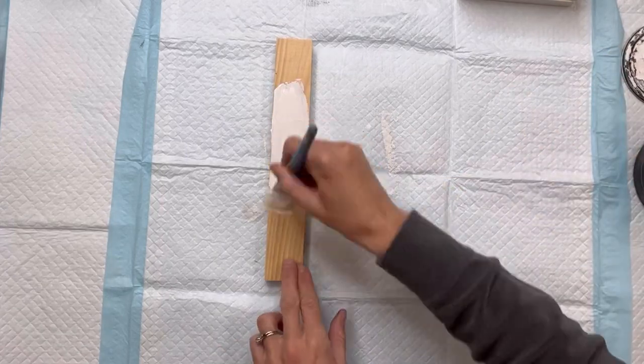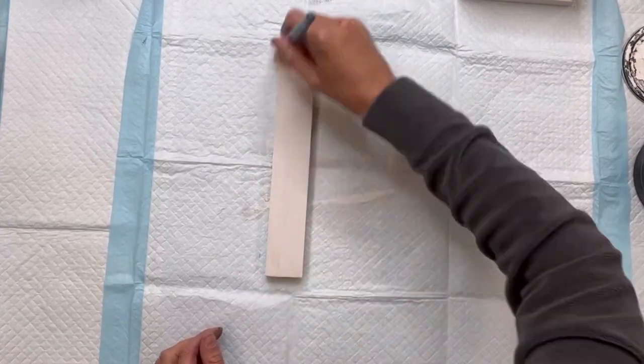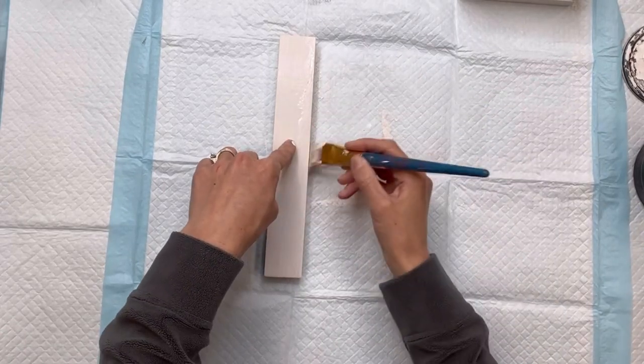I then got this pre-cut piece of wood from Dollar Tree. I believe it's about 10 inches and I'm going to paint the entire thing using some Wise Owl Snow Owl.